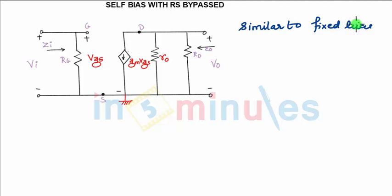The AC equivalent circuit for self bias with RS is similar to fixed bias circuit. What we have seen in fixed bias is a fixed voltage source is applied. So what you can see: ZI is nothing but RG.